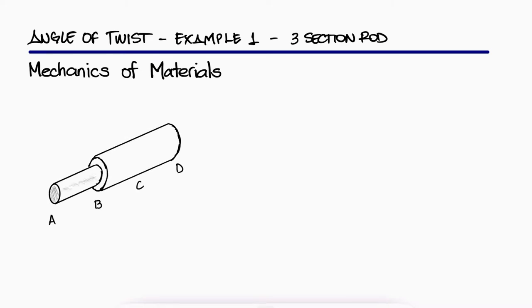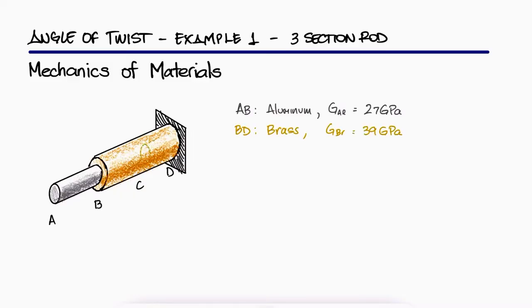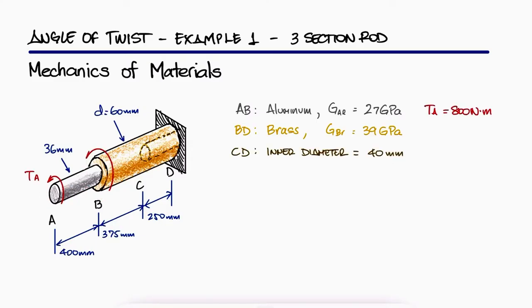The aluminum rod AB is bonded to the brass rod BD. Knowing that portion CD of the brass rod is hollow and has an inner diameter of 40mm, what is the angle of twist at A?